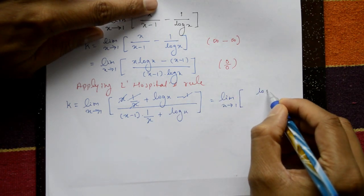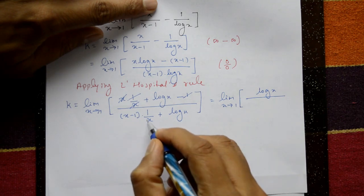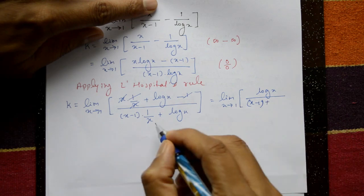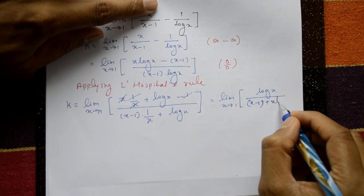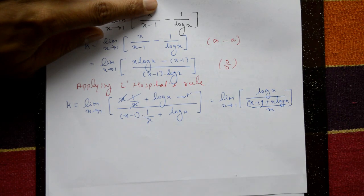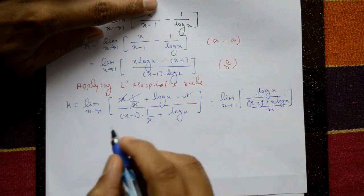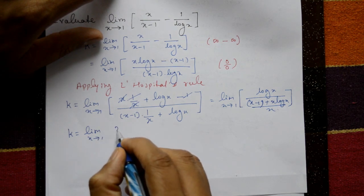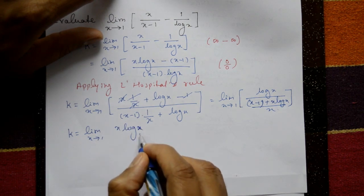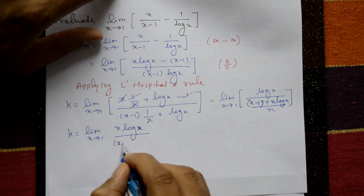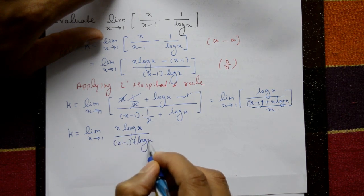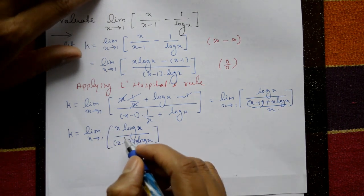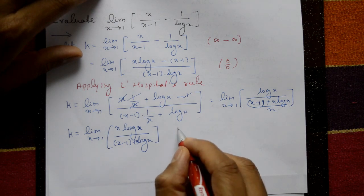After simplification, the numerator part is only log x. The denominator is (x-1) plus x·log x divided by x. Shifting x to the numerator, k equals limit x tends to 1 of x·log x divided by (x-1 + x·log x).